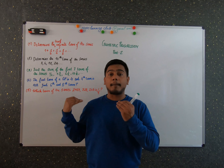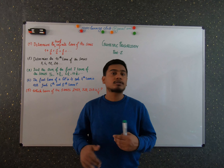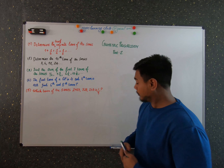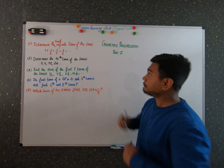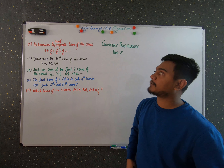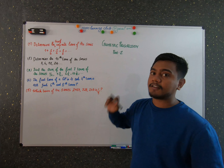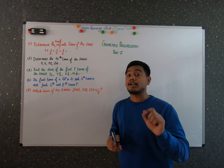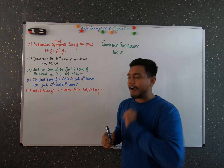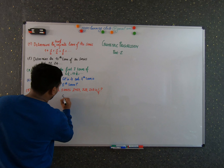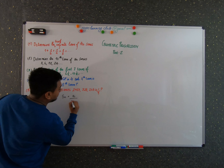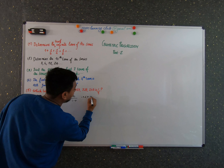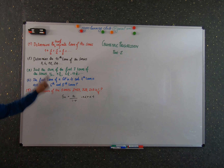Let's use all these formulas to solve the problems. The first problem: determine the sum of infinite terms of the series. For infinite terms, you can use the formula S_∞ = a / (1 − r), but this is valid only when −1 < r < 1.